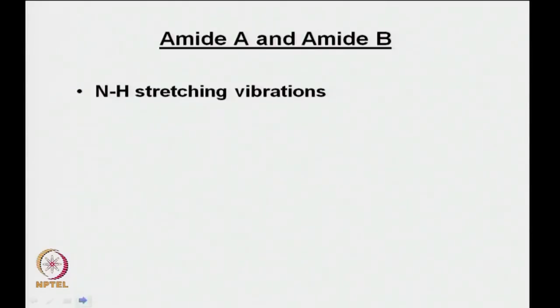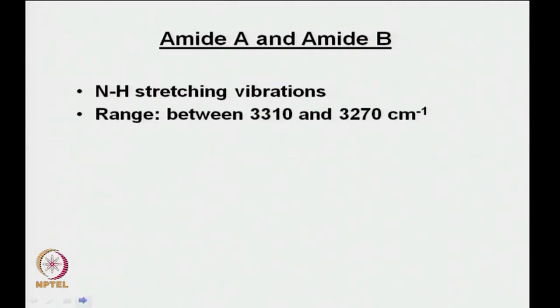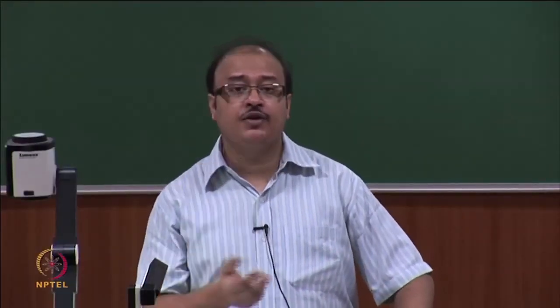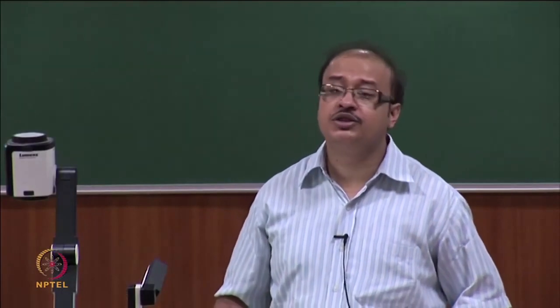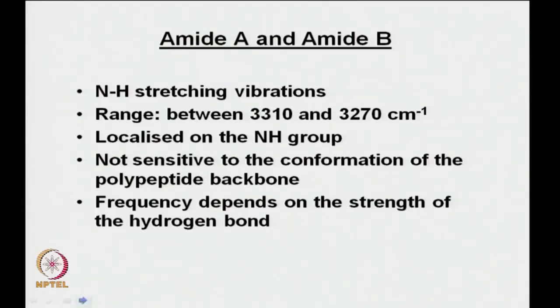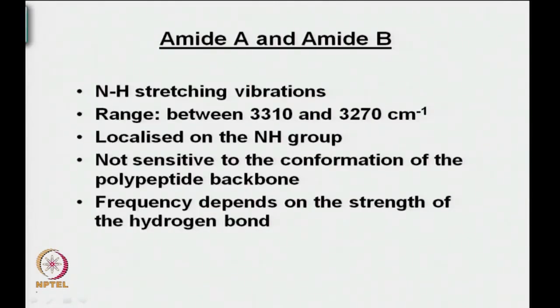Amide A and amide B are essentially N–H stretching vibrations, ranging between 3310 and 3270 cm⁻¹, localized primarily on the N–H group. They are not sensitive to the conformation of the polypeptide backbone. This is a problem because if you want to see changes in secondary structure — alpha helix to beta sheet, or to random coil — this mode will not show you what is happening.